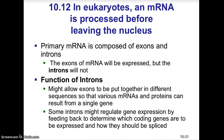In eukaryotes, messenger RNA is processed before leaving the nucleus. The primary messenger RNA is composed of DNA fragments called exons and introns. The exons of messenger RNA are the ones to be expressed, and the introns will not be expressed. What are the functions of introns, then, if they are not to be expressed? They might allow exons to be put together in different sequences so that various messenger RNAs and proteins can result from a single gene.